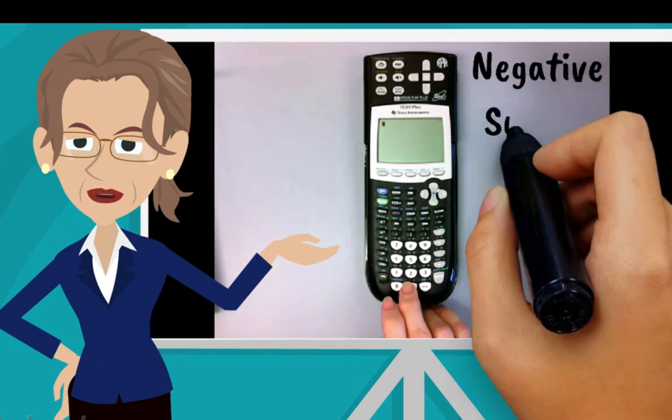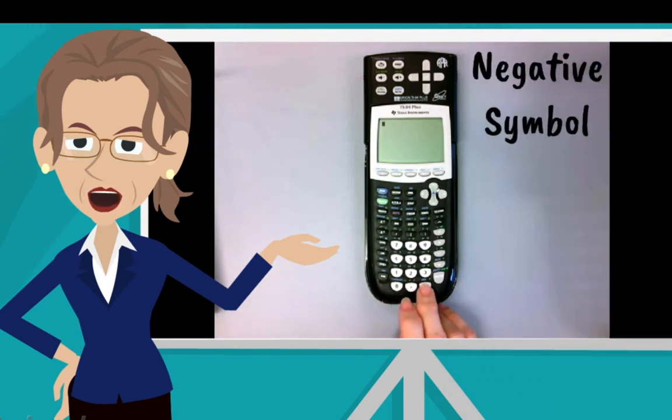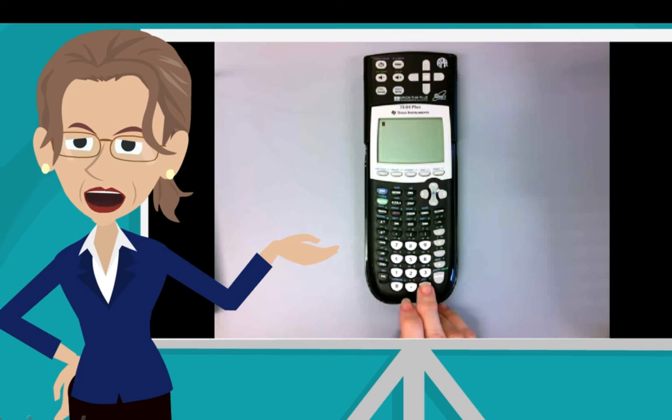The negative symbol. The key immediately to the right of the decimal is the negative symbol. This key lets you turn a positive number into a negative one. To make a number negative, press the negative symbol before you enter the number. Let's hear it. Negative symbol.